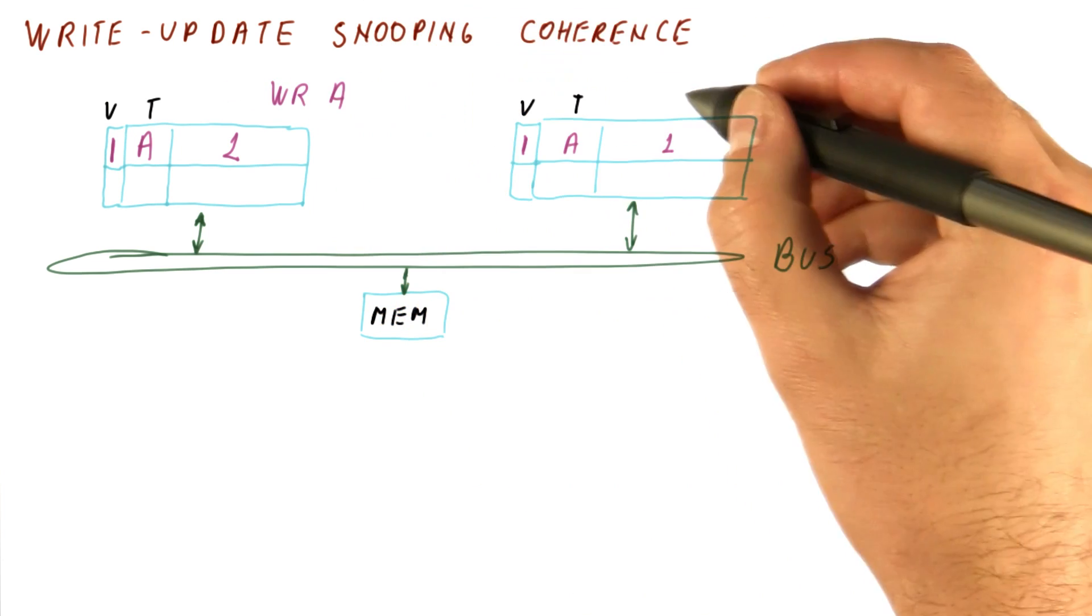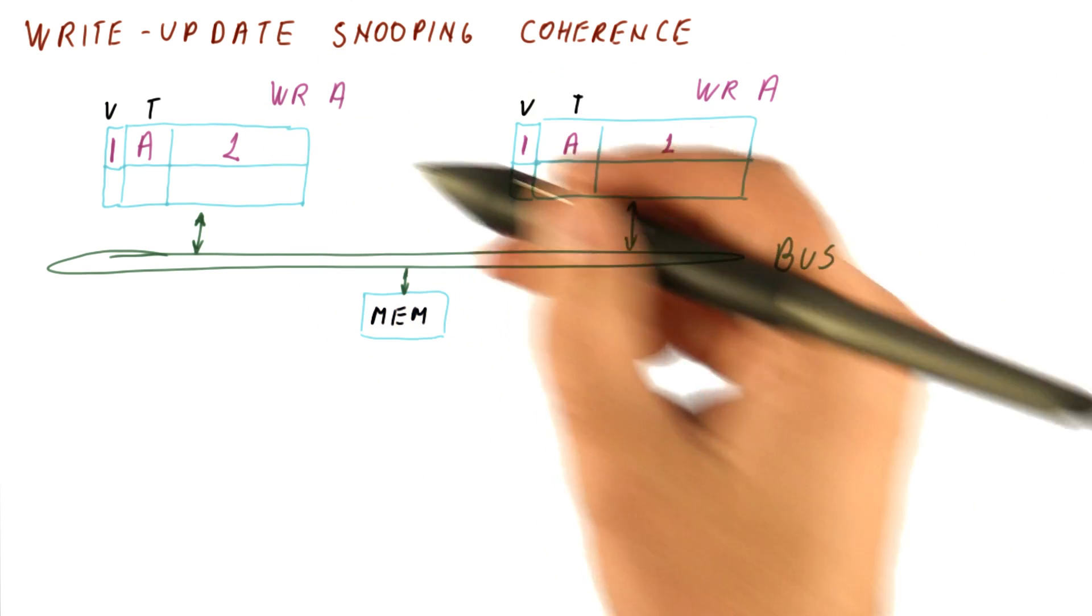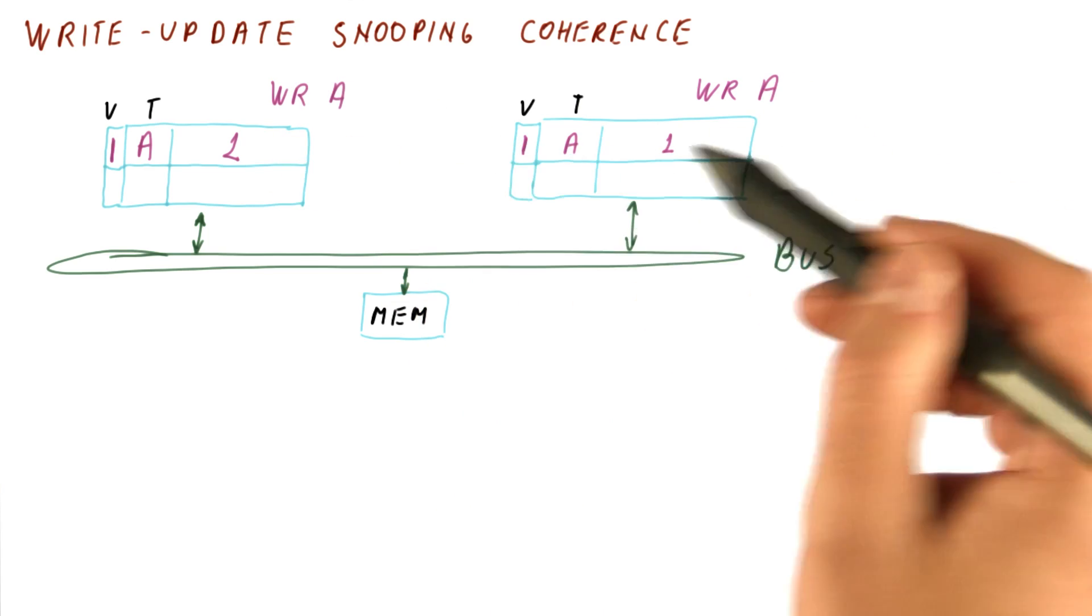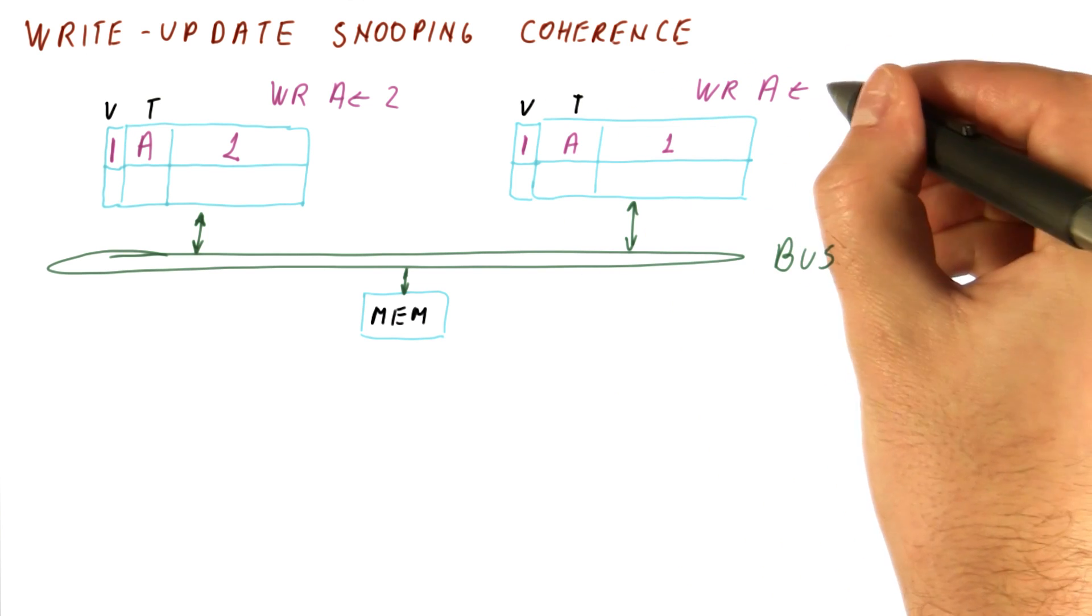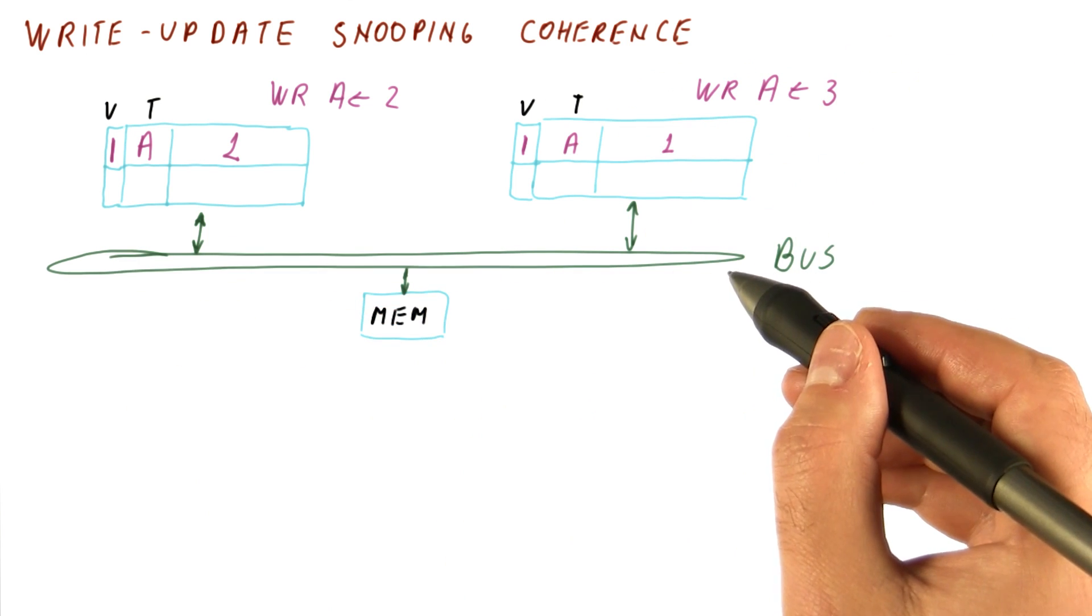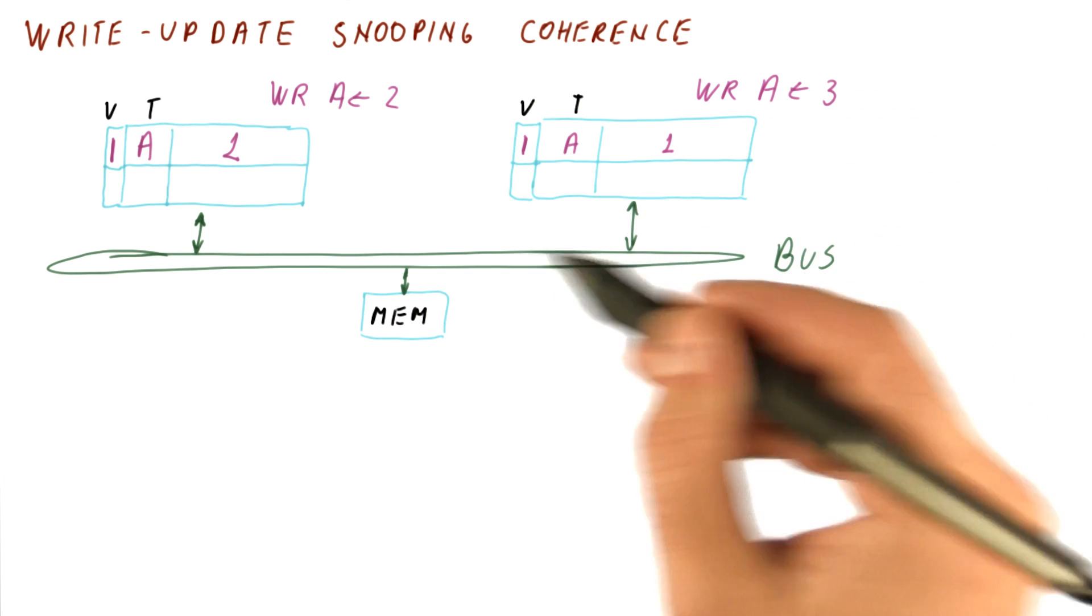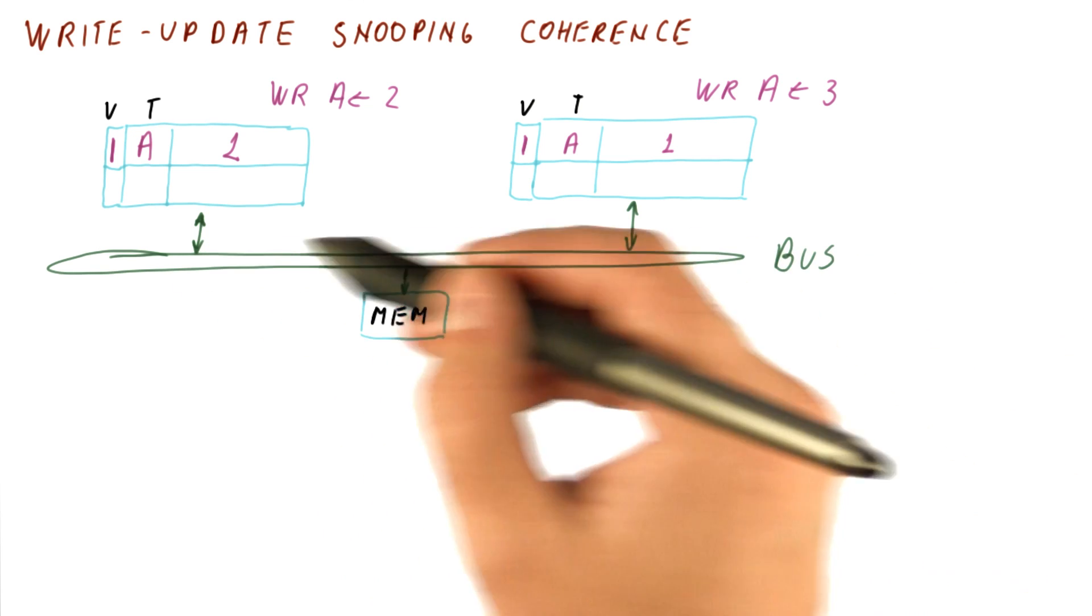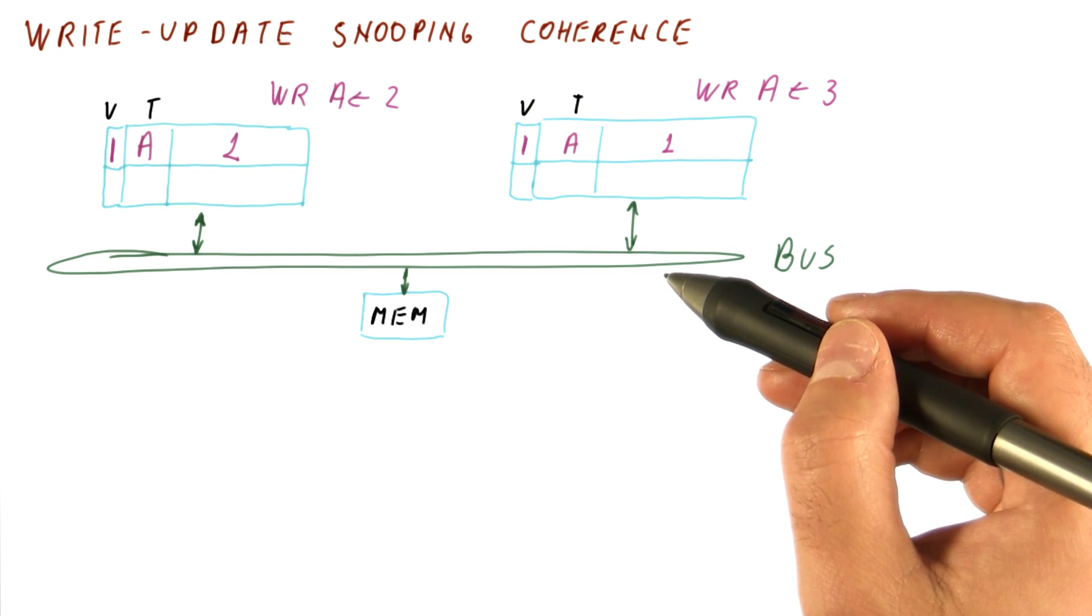Now let's see what happens if both of these processors try to write to A at about the same time. This is a situation where they might disagree about whose write happened first. Let's say this one is trying to write two, and this one is trying to write three. Well, there is a single bus, a single set of wires that can carry the value and address. So processors, when they want to send something on the bus, first have to arbitrate for it. This arbitration for the bus basically decides who gets the bus next.